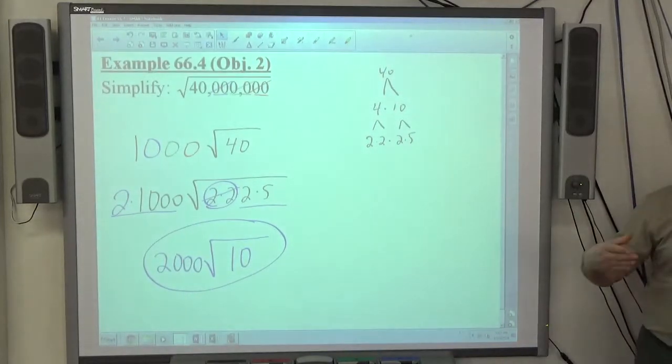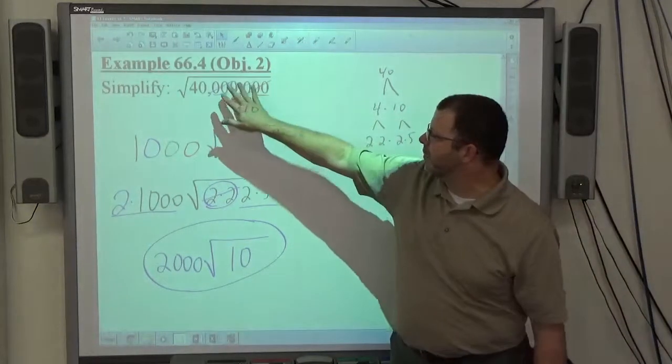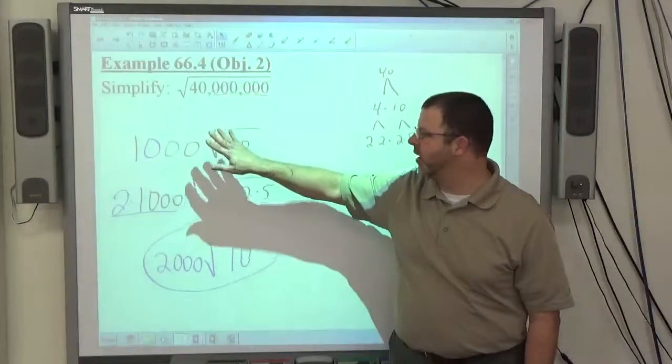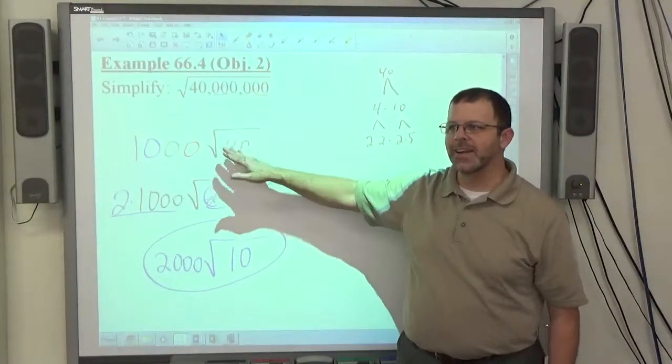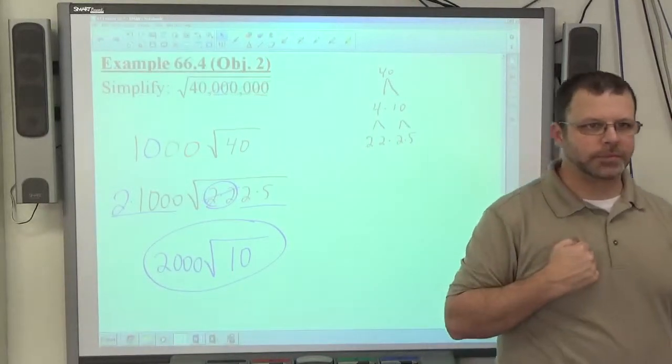So, again, every pair of zeros, pull those out first. What that does is it takes it from a really huge number inside to a reasonable size number inside. Then, if you need to factor beyond that, you're able to do that.